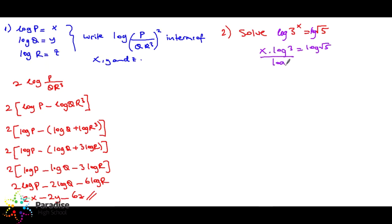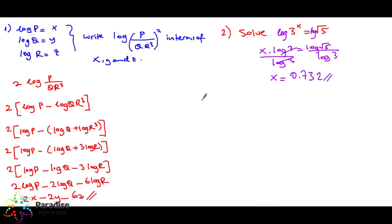Then x equals log(root five) divided by log 3. To find the answer I'll use the calculator: logarithm of root five divided by logarithm three. The answer is 0.732, which is the final answer.